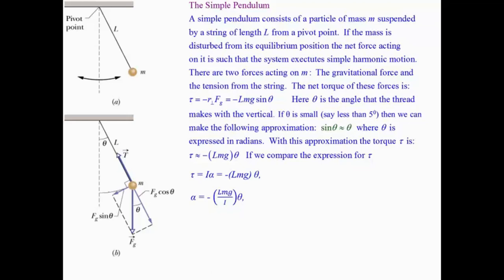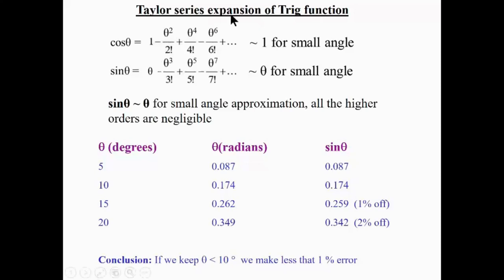Before deriving the simple pendulum period, we need the small angle approximation. Using the Taylor series expansion, sin θ and cos θ can be expanded in powers of θ. For small θ in radians, higher-power terms become negligible, so sin θ ≈ θ. This is called the small angle approximation. For 5 degrees: nearly exact; for 15 degrees: ~1% deviation; for 20 degrees: ~2% deviation. Keep θ less than about 10 degrees to use this approximation.